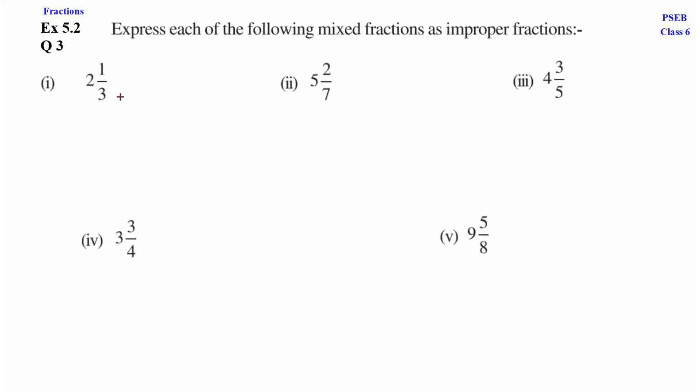First part is 2 and 1 upon 3. Now, we have to write improper fractions. We have to multiply the denominator with the whole number. So, 3 into 2, we have to add 1. So, 3 into 2 is 6 plus 1 is 7. This is the numerator.